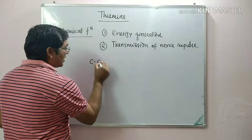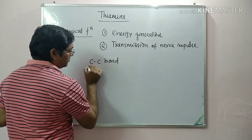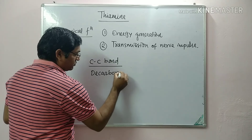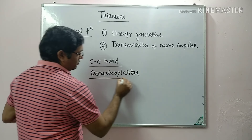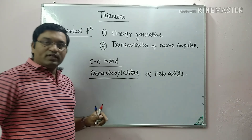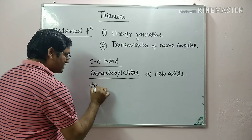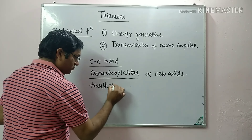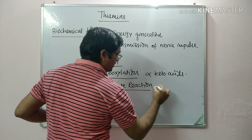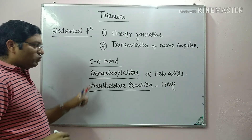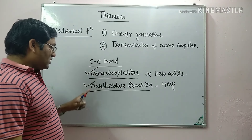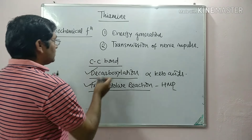Thiamine is required for cleavage of carbon-carbon bonds. It is required for decarboxylation reactions of alpha-keto acids. It is also required for the transketolase reaction. So these are the two important reaction types catalyzed by thiamine: decarboxylation reactions and the transketolase reaction.